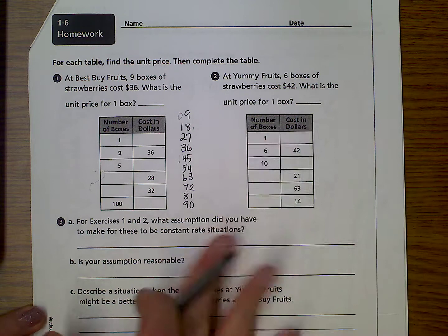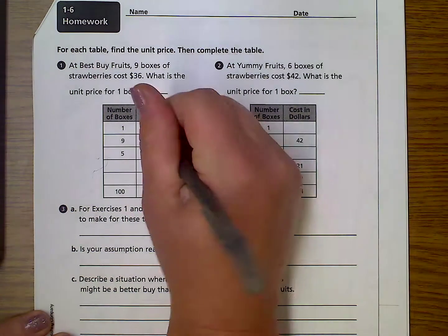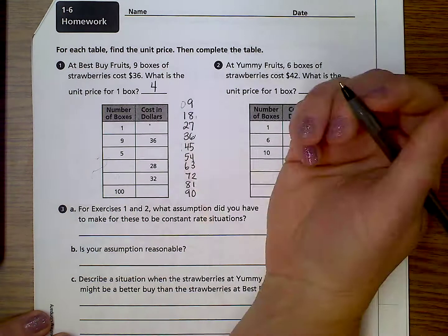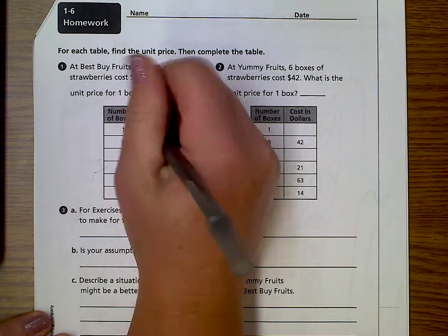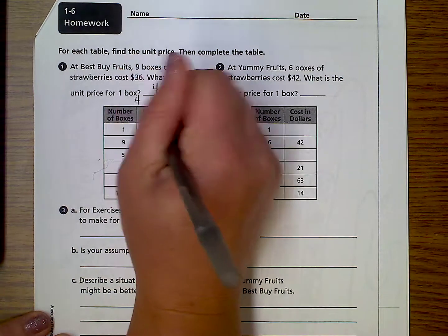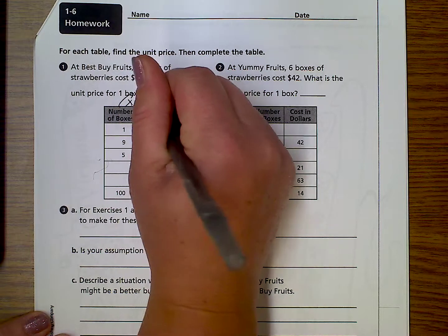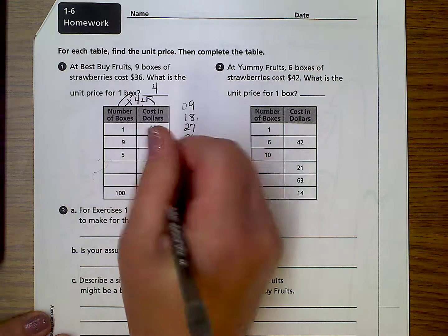So anyway, that's just another interesting fact. So 9 goes into 36 4 times. So each box costs $4. So one box would be $4. So that means everything's going this way, and we talked about this, is times 4.